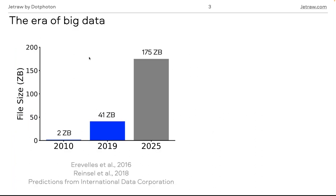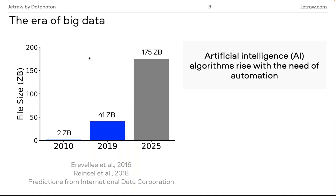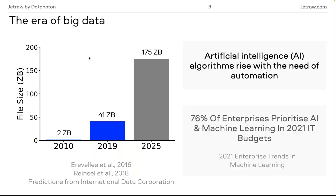As you may already know, we're living in the era of big data. There are more and more images and data being produced, mainly because we have better systems, better cameras, better chips, which means we can acquire higher quality and bigger images. Of course, that also means we have to process all of this data. Since we can no longer rely only on humans, artificial intelligence algorithms have risen in the last decades — we need automation to perform these tasks, in both academia and industry.